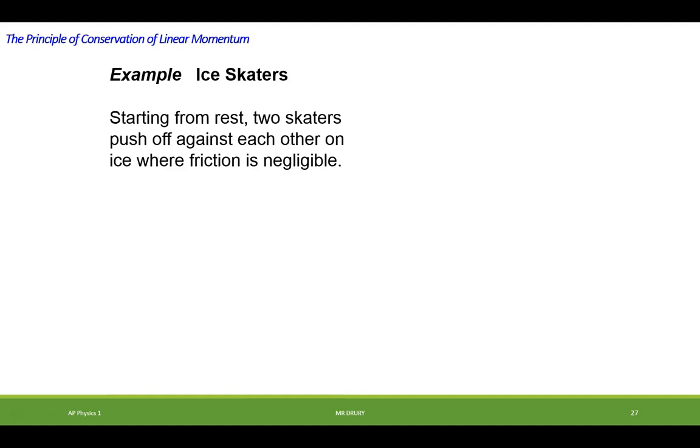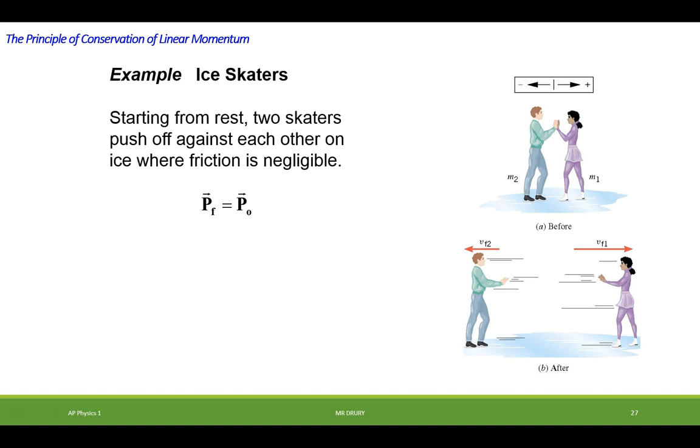So let's try an example. We're gonna start with two ice skaters. They start from rest and push off each other on ice where friction is negligible. So that means there's no external force acting on it. Yes, there's weight acting down and normal force acting up, but as you can see from before they would cancel each other out. So we can actually say the momentum before is equal to the momentum after. And here's our two skaters.